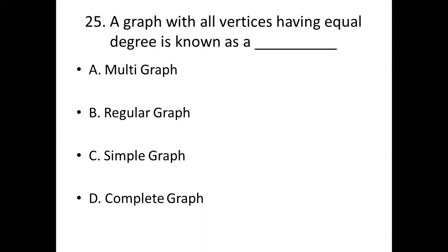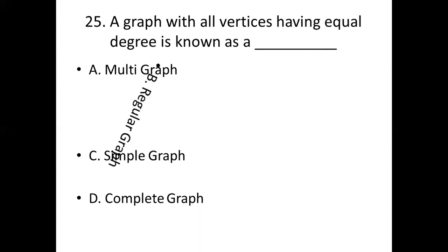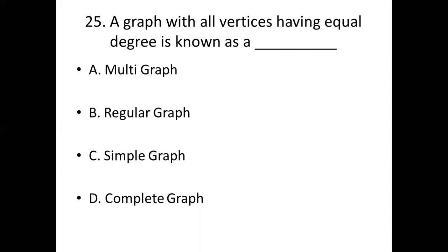Twenty-fifth bit. A graph with all vertices having equal degrees is known as dash. Option A, multigraph. Option B, regular graph. Option C, simple graph. Option D, complete graph. Answer: Option B, regular graph.